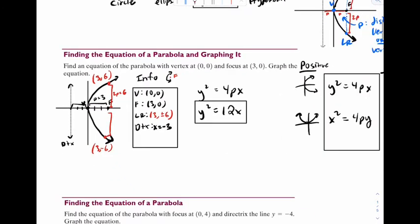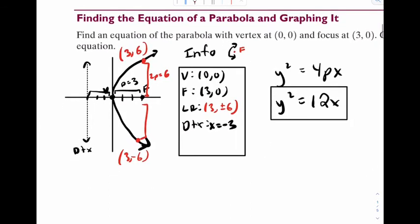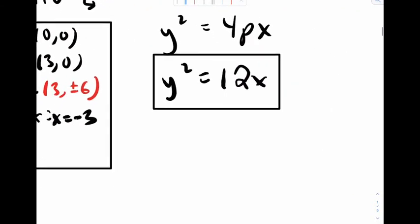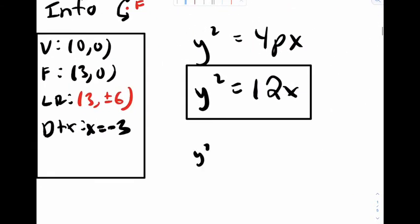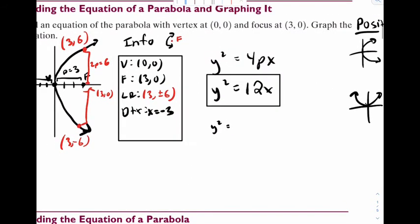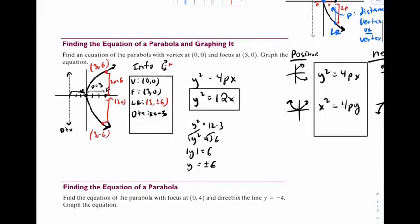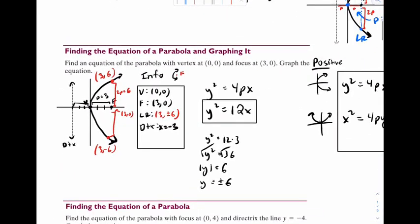But let's say you have no idea how to do that. You can still just derive it. Because I know this focus point is (3,0). If I have this equation right here, just plug in x equals 3. 12 times 3, y squared is equal to 36. Square root, the absolute value of y is 6. So y must be plus or minus 6. And notice how we get the exact same thing there. So there's our first problem. No problem.